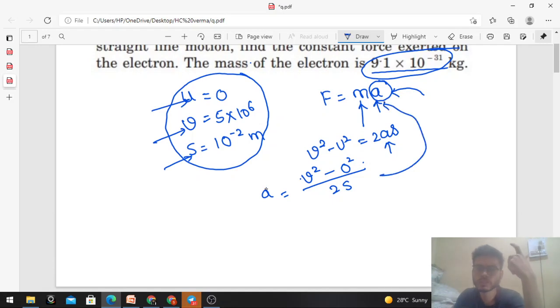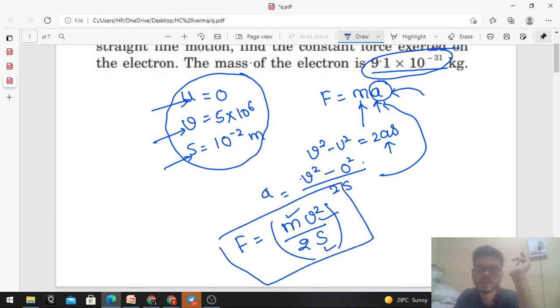Force F = m × v²/2s. Everything is known - mass is known, final velocity is known, displacement is known. Just substitute all these values and you can find the value of force.